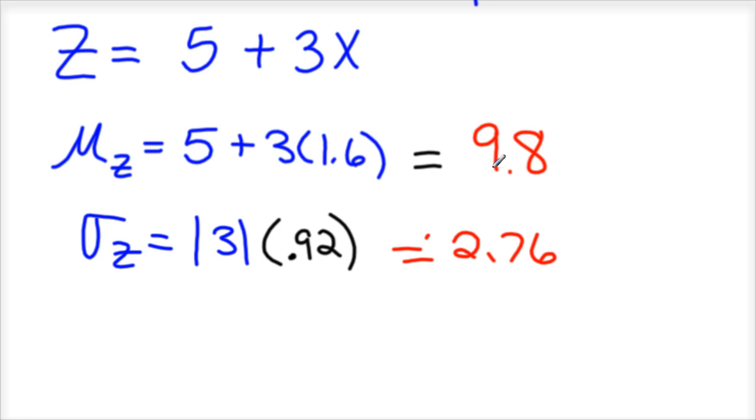So maybe per ride he gets $5 every time he goes somewhere, and he gets $3 per passenger extra from the company. That would be the situation here. And so that kind of wraps it up. Hopefully that explains transformations with your mean and standard deviation for a discrete probability distribution. Good luck. See you next time.